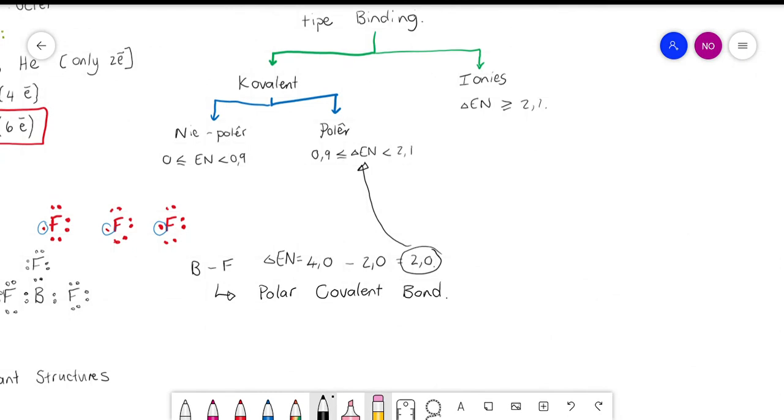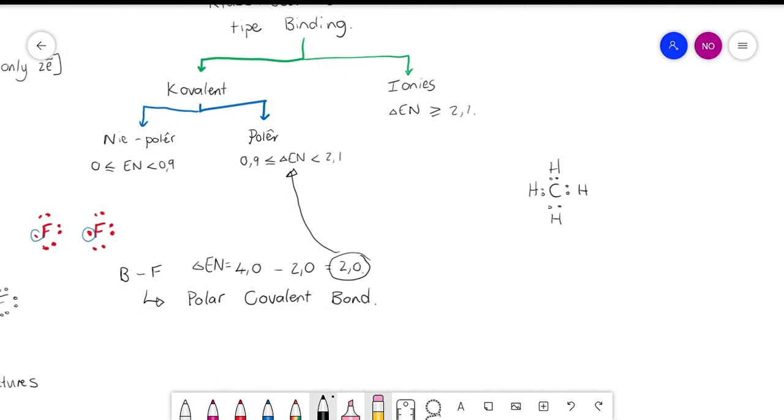So let's do another one. Say you draw CH4 and I ask you to classify for me what type of bond there is. Then you look at the difference in electronegativity, which is carbon minus hydrogen, which is equal to 0.4, and therefore it will be a non-polar covalent bond.